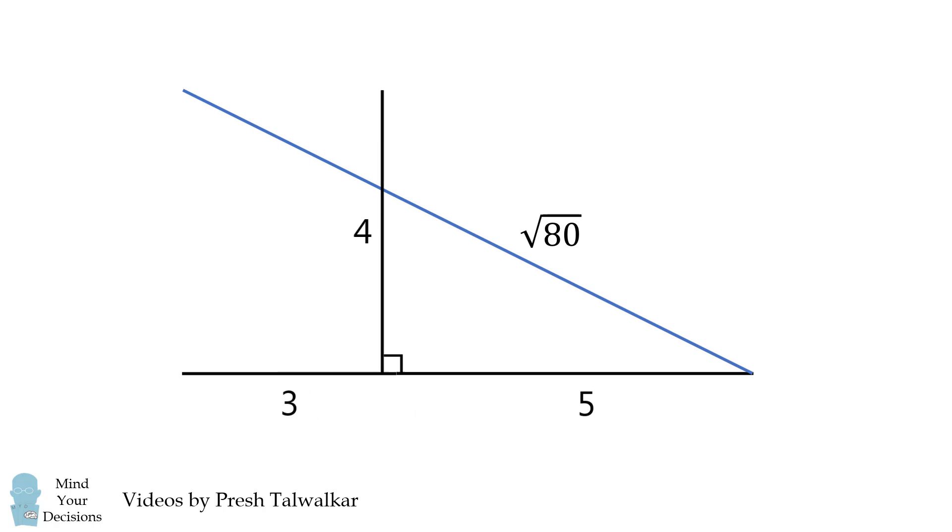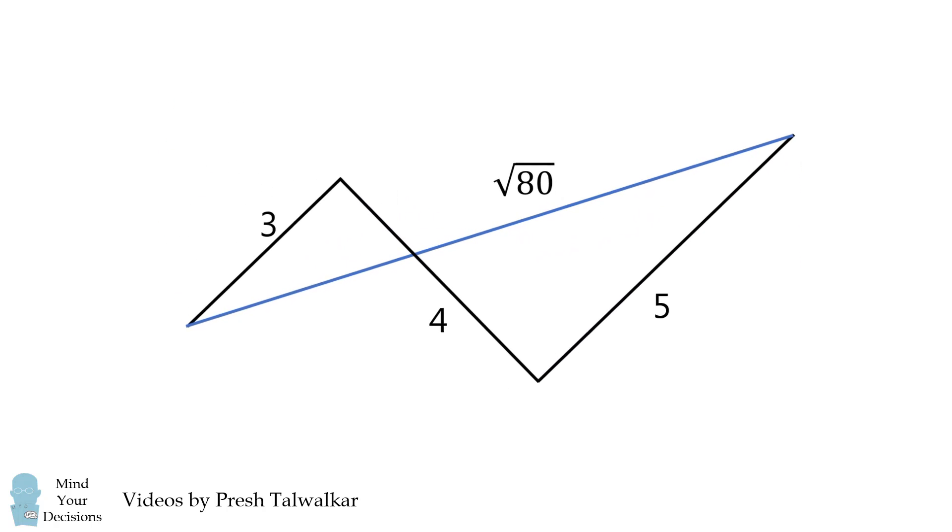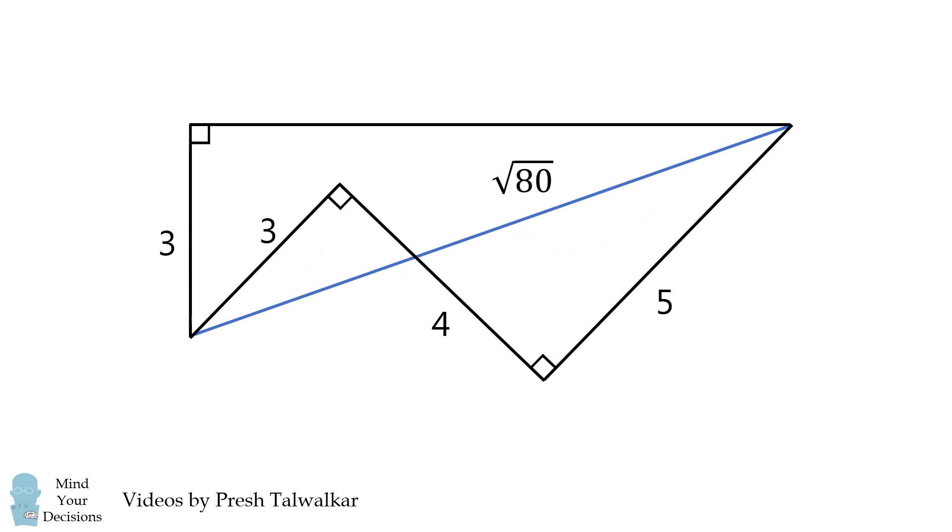We can then go back to our original diagram. The distance from end to end will be the square root of 80. If we put this back into our original shape, we now have a right triangle where one leg is 3 and its hypotenuse is the square root of 80.